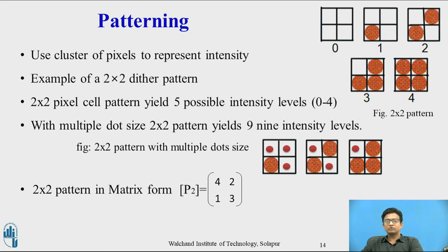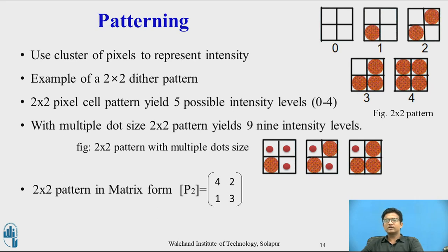In the figure you can see a 2 by 2 pattern with multiple dot sizes — if you have varying pixel sizes, smaller and larger, it gives 9 intensity levels. This can also be represented in matrix form. P denotes the bi-level pattern, that is the 2 by 2 pattern. The first pixel is 1, next in the diagonal is 2, then 3 is the pixel below, and at the diagonal of 3 you have 4. This is the matrix representation of the 2 by 2 pattern.